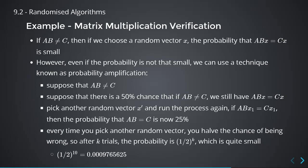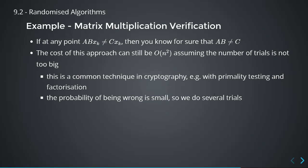You try different values for x — different vectors. If at any point you get A×B×x ≠ C×x, then you know for sure that A×B ≠ C. But if you do this 10 or 20 times and keep getting A×B×x = C×x, then there's a very, very good chance that A×B = C. The cost of doing this is still O(n²), assuming the number of trials is not too large. For a 100×100 matrix done 10 times, that's still much less than O(n³).